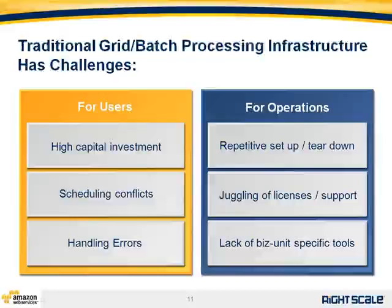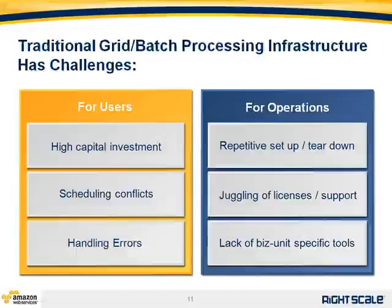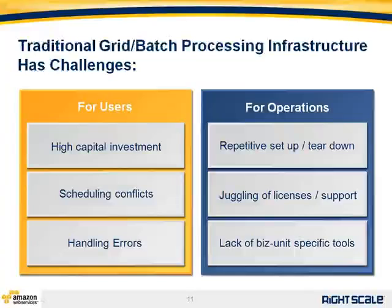Let's talk about RightScale for grid and batch processing in the Amazon cloud, starting with a couple of key challenges. The first is CapEx — if you need to set up an internal grid, you're having to outlay cash upfront, which is expensive and ultimately dictates the size of the environment you can create. The second is scheduling conflicts — not having transparency or control over when your job gets completed. You submit your job, it gets bumped by a higher priority job, and you have no visibility into when it will complete.